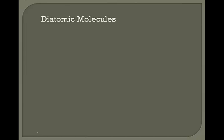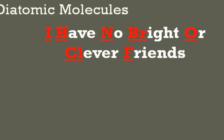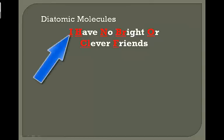If we use the mnemonic device 'I have no bright or clever friends,' this gives us our seven diatomic molecules: I for iodine, H for hydrogen, N for nitrogen, Br for bromine, O for oxygen, Cl for chlorine,